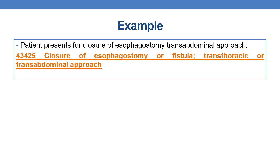Let us see a question. A patient presents for closure of esophagostomy, transabdominal approach. The CPT is 43425 — closure of esophagostomy or fistula, transthoracic or transabdominal approach. This CPT covers both transthoracic and transabdominal approaches, so the answer is 43425.